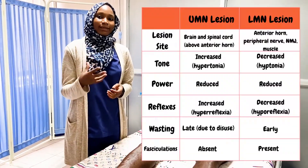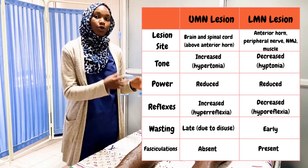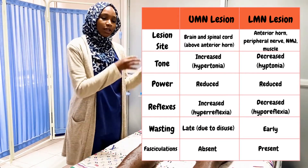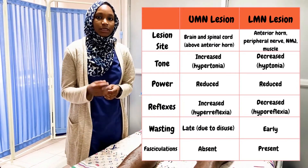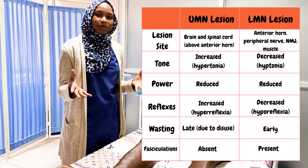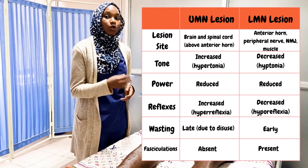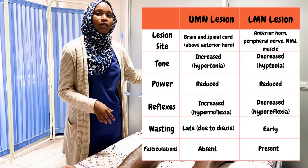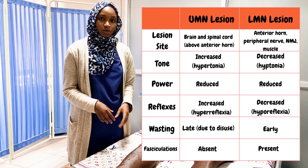For upper motor neuron lesion, it usually occurs when there is damage to either the brain or the spinal cord. An example of a cause is a stroke or multiple sclerosis, which can affect the brain in the case of stroke, and multiple sclerosis which can affect both the brain and the spinal cord.